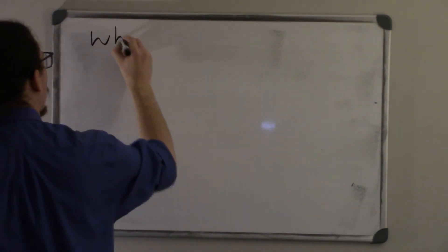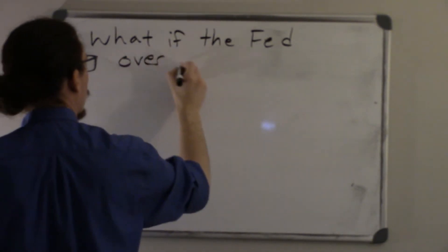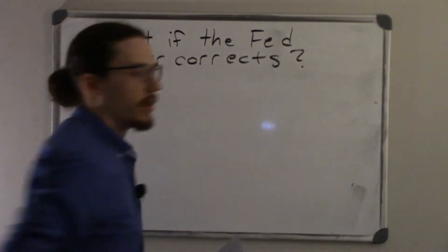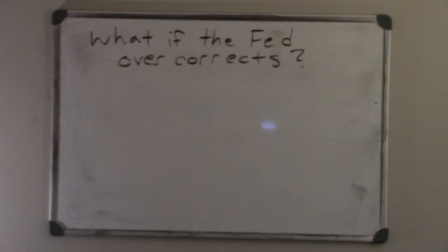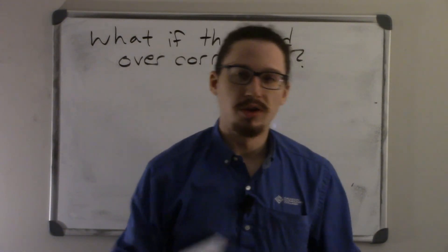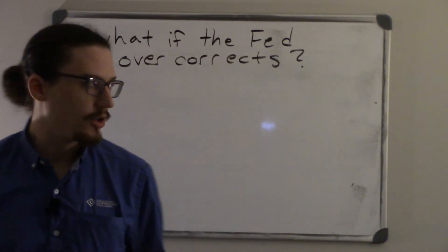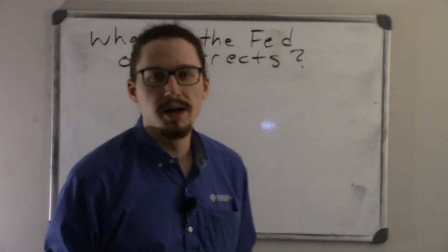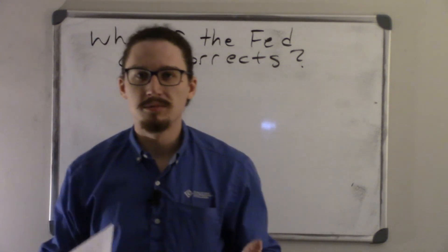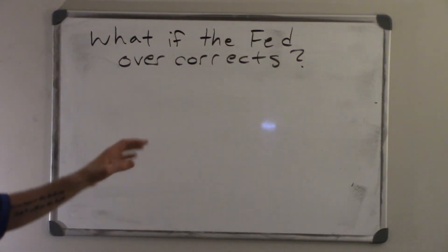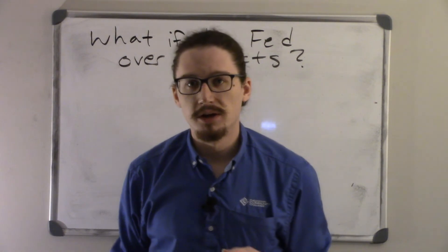Let's talk about what happens if the Fed overcorrects. The amount of money they're trying to inject into the economy might just not be enough — they could undershoot it, for example if banks are pessimistic and holding more reserves. Or the other thing could occur: maybe the economy has already started to self-adjust by the time any of these monetary policies get put into place. Because it does take a while to put them into place, the Fed could overshoot the original aggregate demand curve.